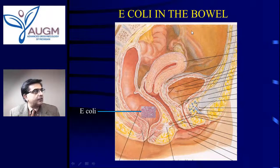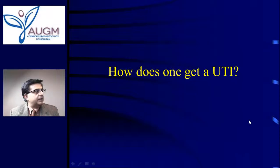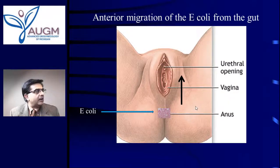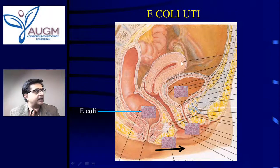E. coli are normally present in the rectum — that's fine. We just don't want them to come forward. So how do you get a bladder infection? It's called a forward movement of the bacteria. The bacteria start at the anus opening and slowly move forward until they get to the urethra, and that is how they may eventually get into the bladder.